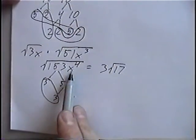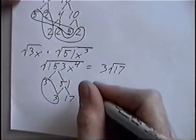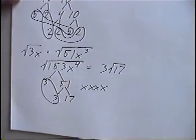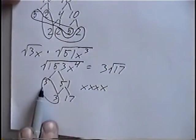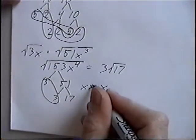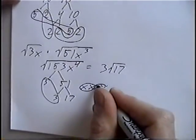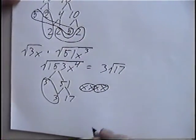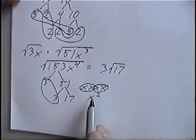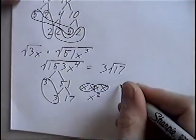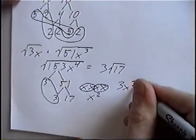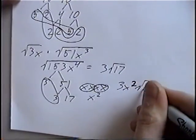For the variables, we have x to the fourth. We can write down four x's — that's the same as x⁴. Using the same steps as before, we circle pairs of x's. We circle two sets of x's, which means the square root of that would be x squared. Putting our number and variable together, we have 3x squared times radical 17. So our final answer is 3x² radical 17.